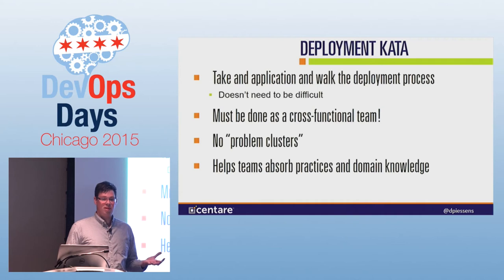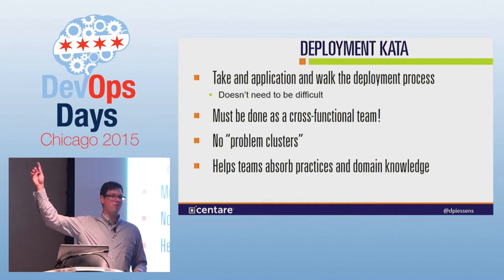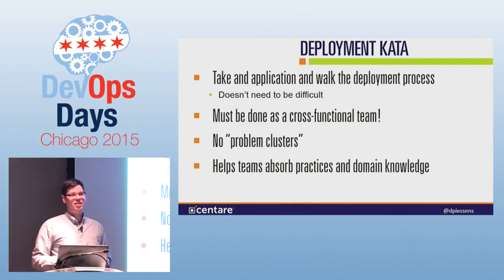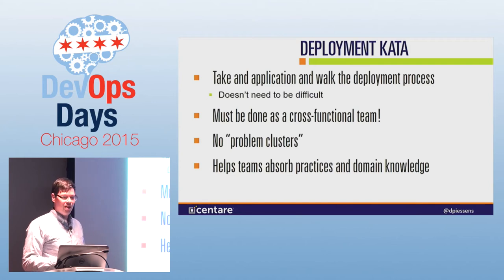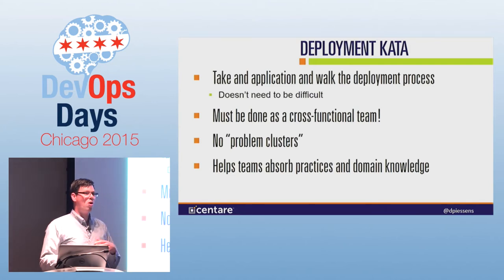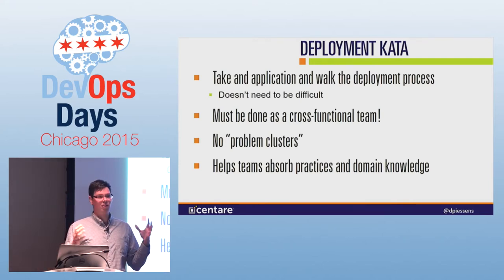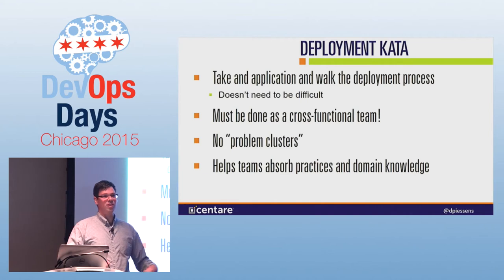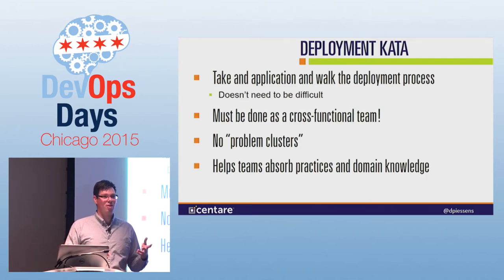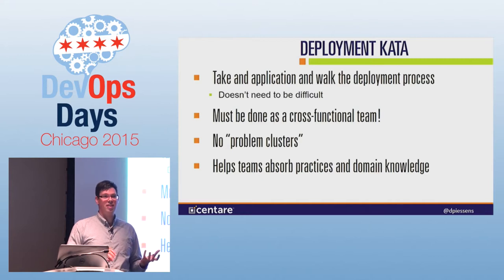One way to practice this as a team is a deployment kata. Kata is a Japanese martial arts word for practicing or rehearsing something. Take a small application and walk through the entire deployment process with your team end to end, including turning toggles on and off, build, deploy, and testing — and make sure it's done as a cross-functional team: your ops people, database people, network engineers, and developers. Understand what I call problem clusters: if there's a database problem, the DBAs can't stay while everybody else goes for coffee. It doesn't build the cross-functional domain knowledge and empathy that the team needs to understand what's going on.